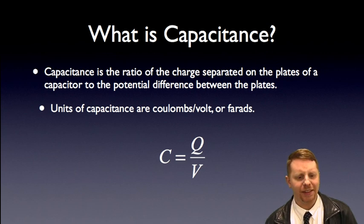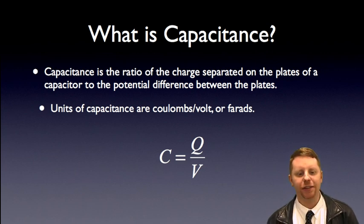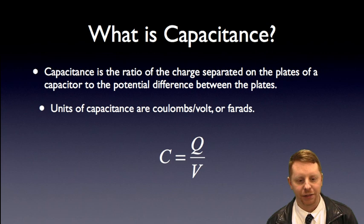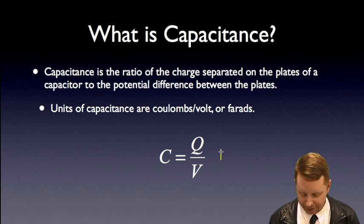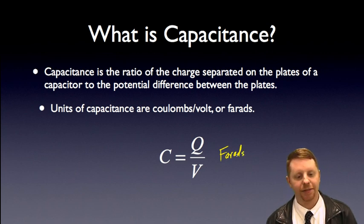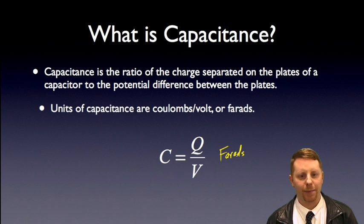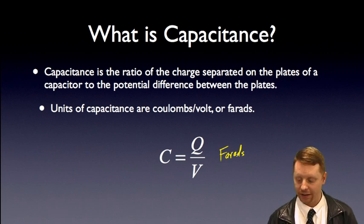Capacitance is the ratio of the charge separated on the plates of the capacitor to the potential difference between the plates. Capacitance, capital C, is charge divided by voltage. The units of capacitance are farads, or capital F. A farad is a very large amount of capacitance, so more often we'll talk about millifarads, microfarads, nanofarads, and even picofarads.